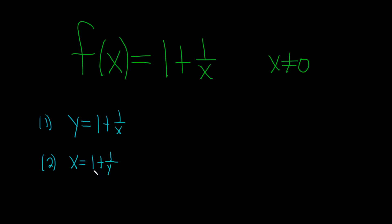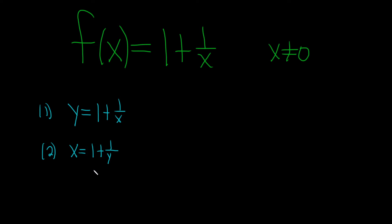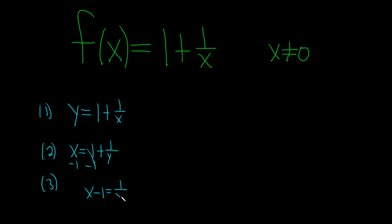The third step is the hardest step, usually — it's to solve for y. So y is down here on the right below this fraction. A good first step would be to subtract 1 from both sides, so you have x minus 1 equals 1 over y.